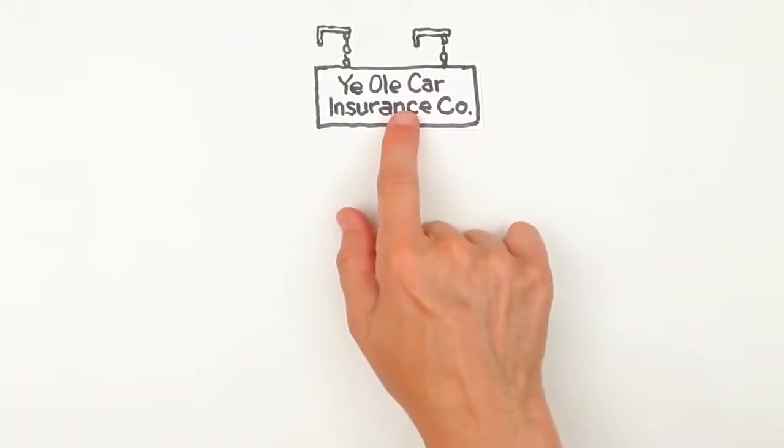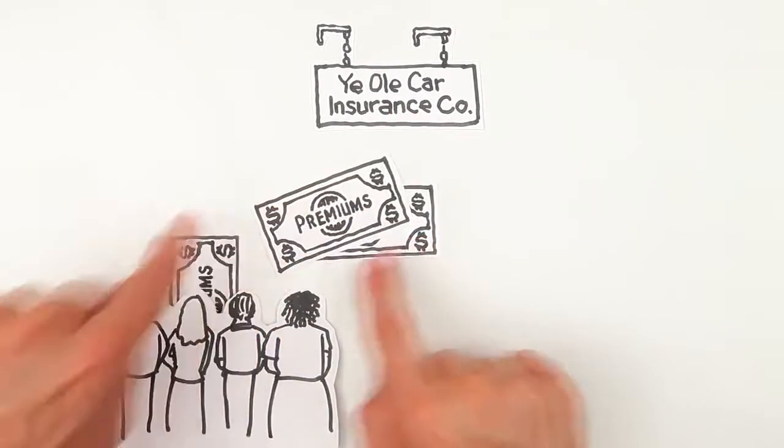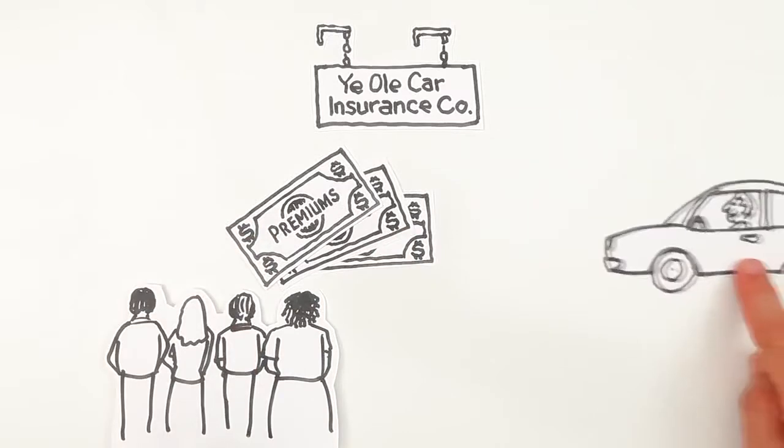It's a lot like an auto insurance company that collects premium payments from its customers, then uses that pool of money to pay accident claims when a customer has a wreck.